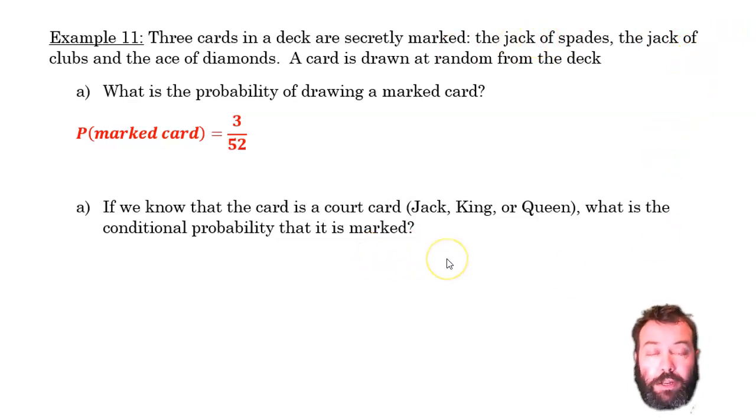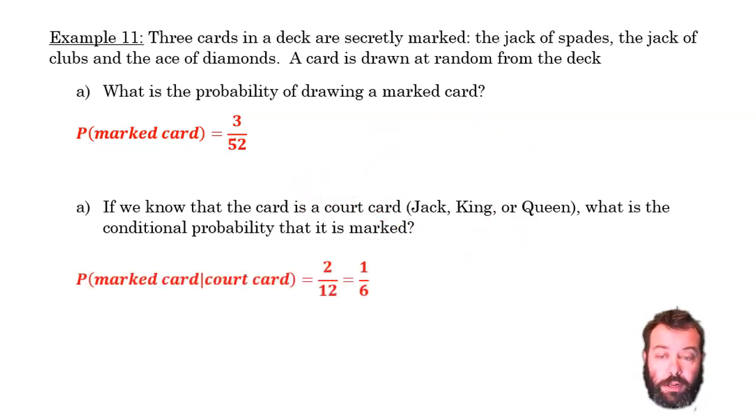So the probability of drawing a marked card, if we have drawn a court card—remember back to the formula here, it was the intersection of A and B. So the intersection, how many marked cards are court cards? Two divided by the size of B. B here is drawing a court card, there's 12 of those. So the probability of drawing a marked card, if we've drawn a court card, is 2 in 12 or 1 in 6.